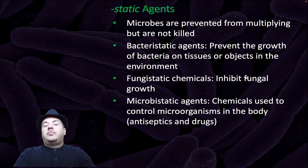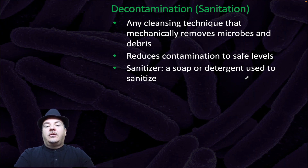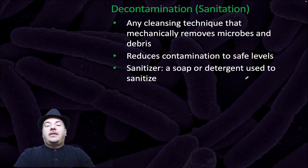Static agents: microbes are prevented from multiplying but are not killed. Bacteriostatic agents prevent the growth of bacteria on tissues or objects in the environment. Fungistatic chemicals inhibit fungal growth. Microbostatic agents are chemicals used to control microorganisms in the body — antiseptics and drugs. Decontamination, also called sanitation, is any cleansing technique that mechanically removes microbes and debris, reduces contamination to safe levels. A sanitizer is a soap or detergent used to sanitize.